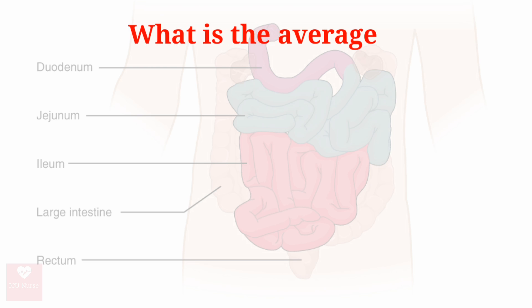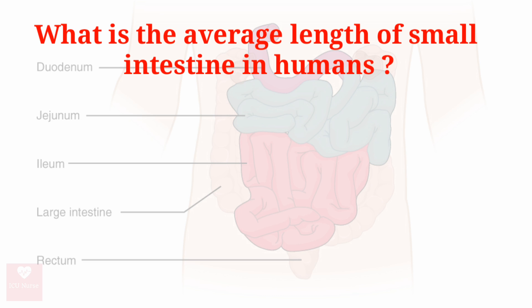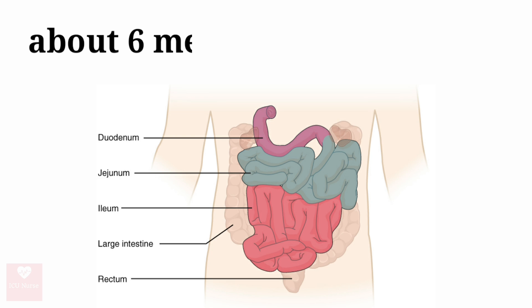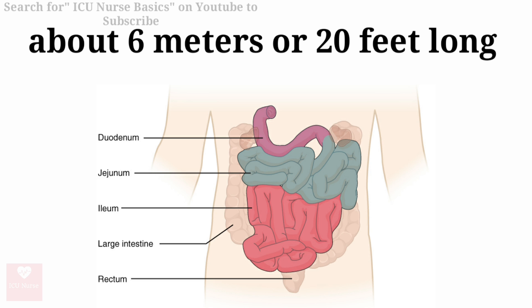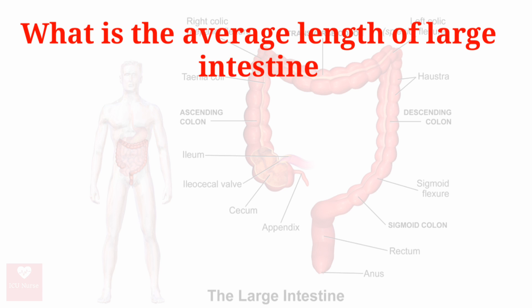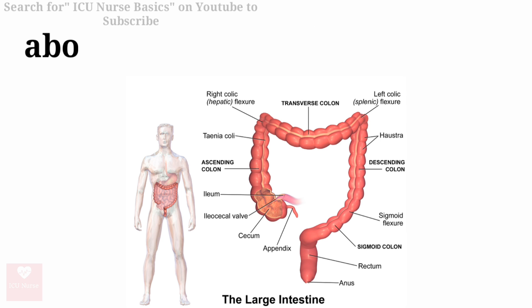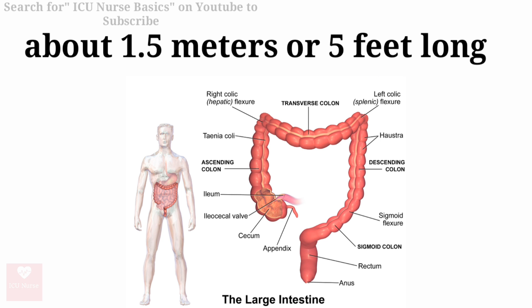What is the average length of the small intestine in humans? The average length is about 6 meters, that is 20 feet long. What is the average length of the large intestine in humans? The average length is about 1.5 meters, that is 5 feet long.